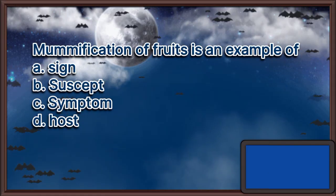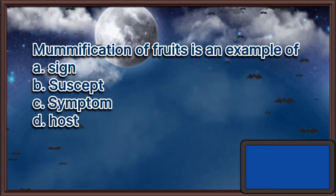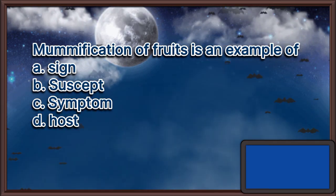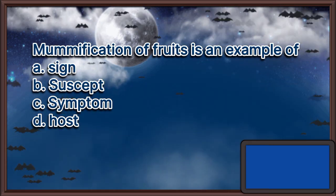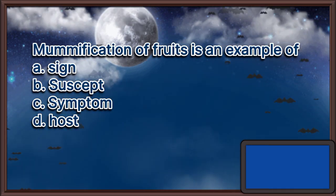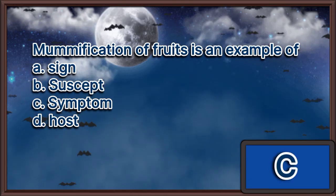Mummification of fruits is an example of: A. Sign, B. Suscept, C. Symptom, D. Host. The answer is letter C.